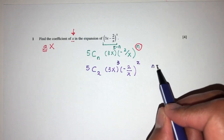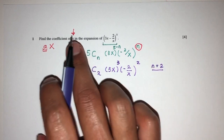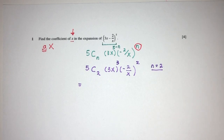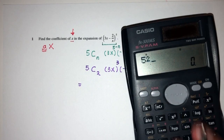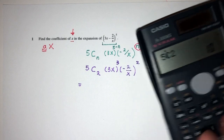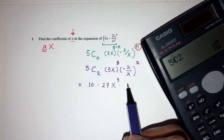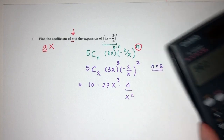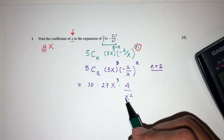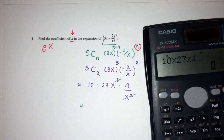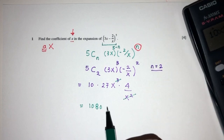Choosing n to be 2, so that when we expand this we'll have something in x. 5 choose 2, that should be 10. That will be 27x cubed, and that will be 4 over x squared. Simplify — this and this will cancel out, so you will have 10 times 27 times 4, that should be 1080x.